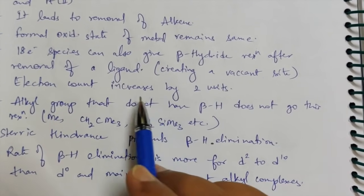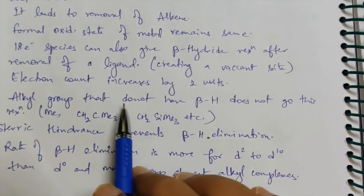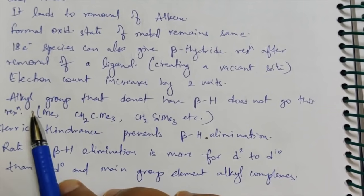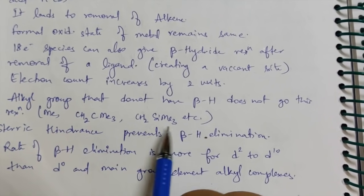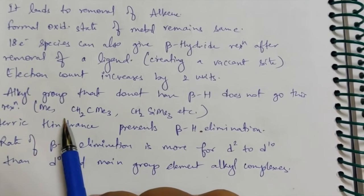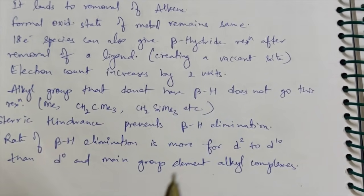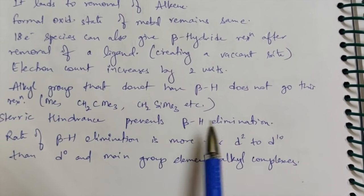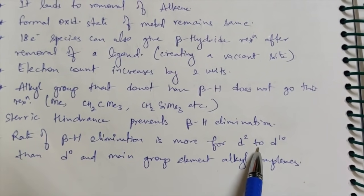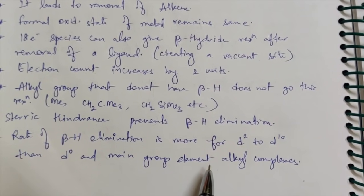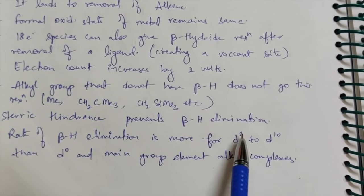18-electron species can also give beta-hydride reactions after removal of a ligand to create a vacant site, but this is rarely seen. The electron count increases by two units when beta-hydride elimination happens. Alkyl groups that do not have a beta-hydrogen do not undergo this reaction — for example CH3, CH2C(CH3)3 — all these ligands have no beta-hydrogen. Also steric hindrance prevents beta-hydride elimination.